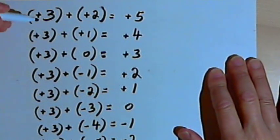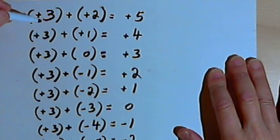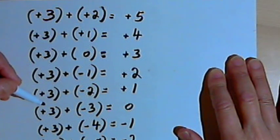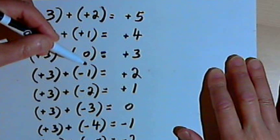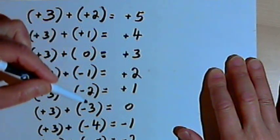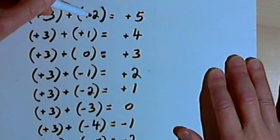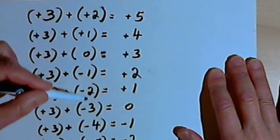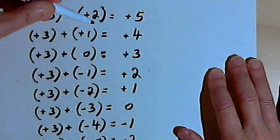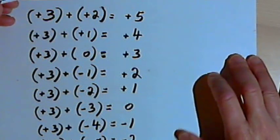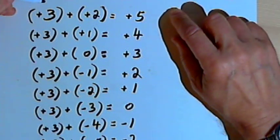What I've got here is a bunch of addition facts. I'm taking the number positive 3 and adding other numbers to it — adding a positive 2, a positive 1, a 0, a negative 1, and so on. In other words, I'm decreasing the number I add on to positive 3 by 1 each time. So let's look at what happens and look at the signs.